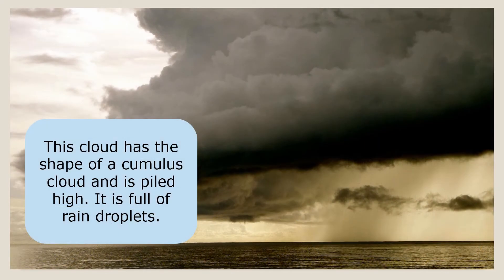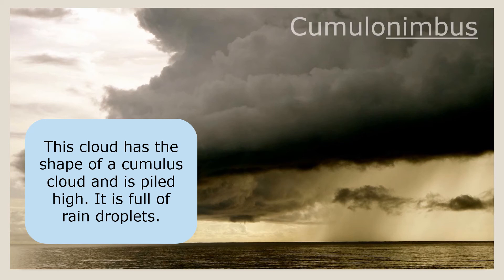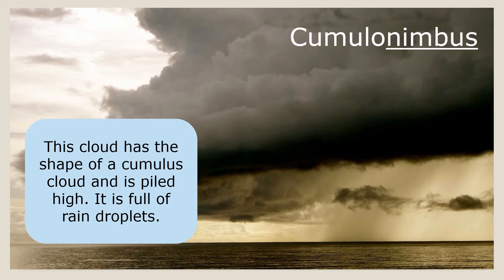This cloud has the shape of a cumulus cloud and is piled high. From the grey colour you can see it is full of rain droplets. This is called a cumulonimbus cloud. Cumulo meaning pile and nimbus meaning rain.